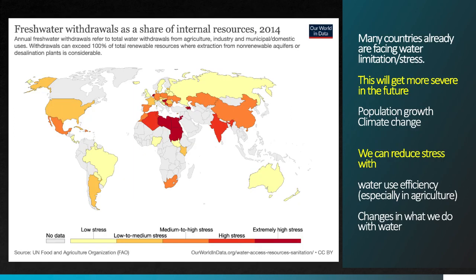To get a sense of how stressed countries are — basically how close they are to the limits of their freshwater withdrawals — this map is a good way to look at it. The United States is in the low to medium stress category overall, with high stress in the southwest. Mexico is in medium to high stress, China is in medium to high stress, and a big chunk of Northern Africa is in extremely high stress. We're already seeing many countries with water limitation or stress, and it's going to get more severe as populations continue to grow.